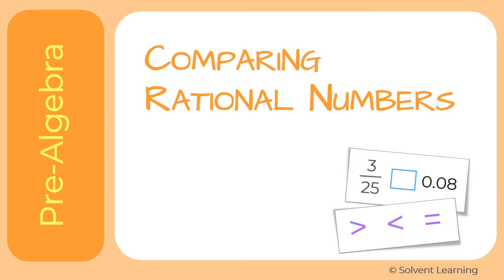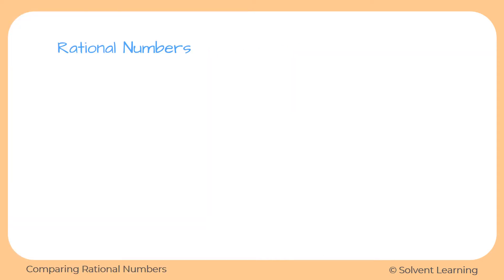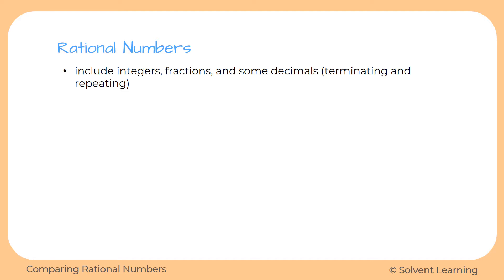In this lesson, we're going to work on comparing rational numbers. Before we begin, let's make sure we understand exactly what those words mean. Rational numbers include integers, fractions, and some decimals — specifically terminating and repeating decimals. Another way to think of it is that rational numbers include any number that can be written as a fraction. So even if it doesn't start out as a fraction, but we could write it as one, then it's a rational number.